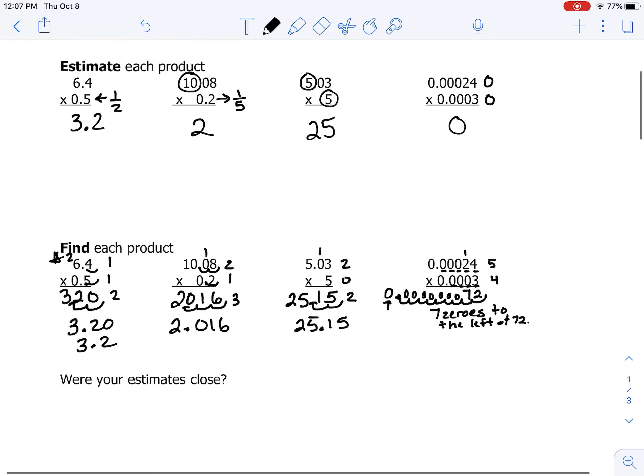All right, so let's take a look. Are our actual products close to the estimates? Well, for the first one, it's exactly the same. So that means we multiplied correctly and put our decimal point in the correct spot. For the second one, yes, those are pretty close.